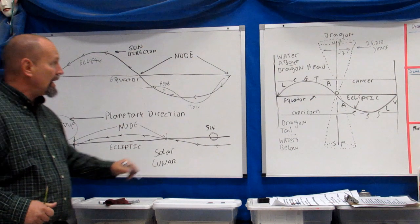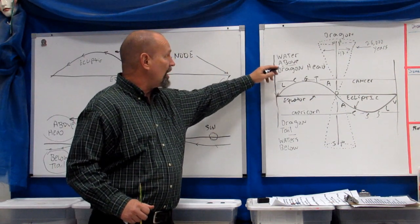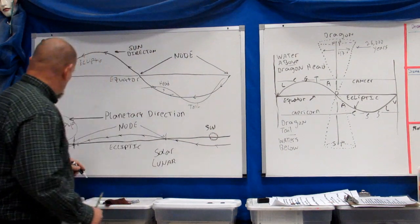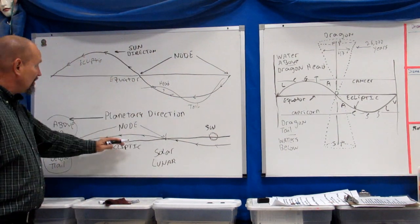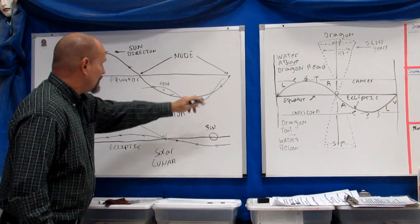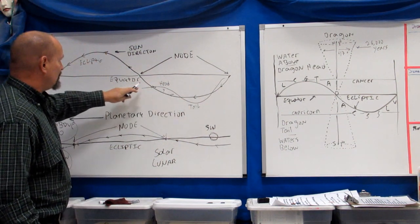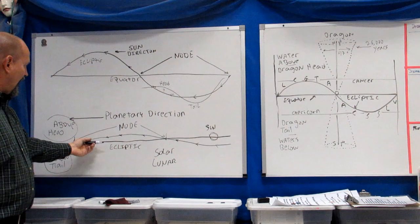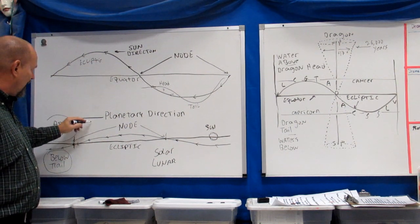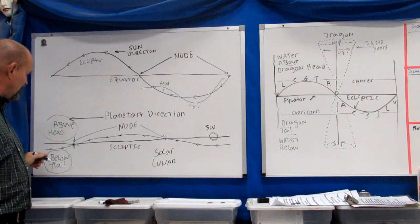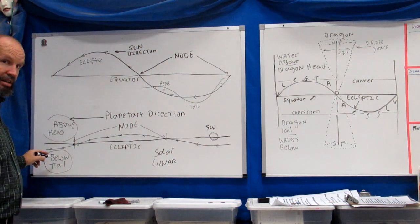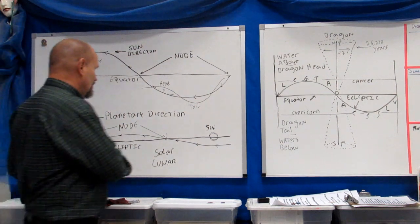Just like we have above the equator the dragon head, the waters above, the dragon tail, the waters below, we also have along this ecliptic line. We see the movement of the planets coming across the ecliptic line. Here we have the dragon head—everything above the ecliptic line is considered the dragon head, and everything below the ecliptic line is considered the dragon tail.